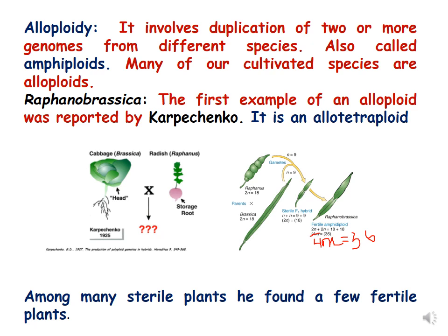In today's lecture we are going to discuss some examples of alloploids which have been developed naturally as well as by the treatment of the chemical colchicine. Let us discuss the first example of alloploidy. What is alloploidy? It involves duplication of two or more genomes from different species, and they are also called amphiploids.